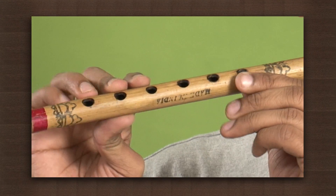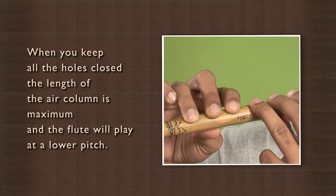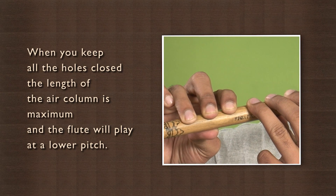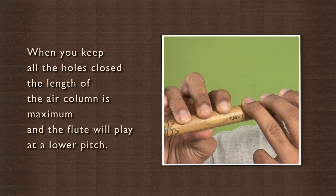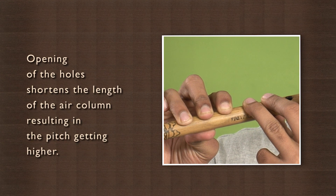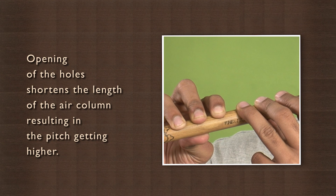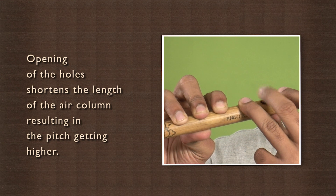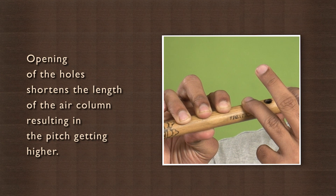Is the pitch of the sound higher with the holes closed or holes opened? When you keep all the holes closed, the length of the air column is maximum and the flute will play at a lower pitch. Opening of the holes shortens the length of the air column, resulting in the pitch getting higher.